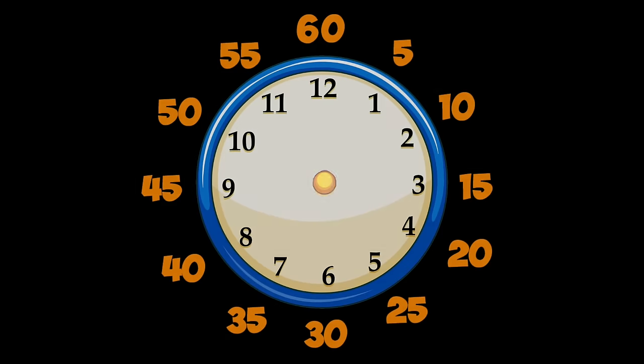Now let's review. The long hand on the clock shows the minutes and the small hand shows the hour. We always say the hour — or where the small hand is pointing — first. For example, this clock shows three o'clock because the small hand is pointing to the 3 and the long hand is pointing to the 12.